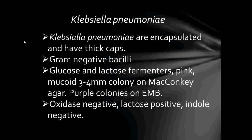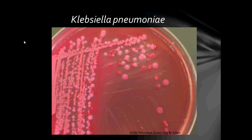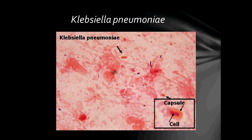For example, E. coli, from those that do not, like Salmonella or Shigella. Organisms that ferment lactose usually display nucleated colonies, a term meaning colonies with dark centers. Klebsiella pneumoniae are also oxidase negative, lactose positive, and indole negative. This is Klebsiella pneumoniae — you can see that they form pink mucoid colonies. Under microscopic view, you can see that they are surrounded by a thick capsule.